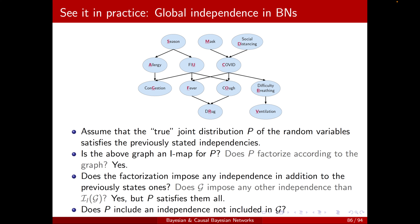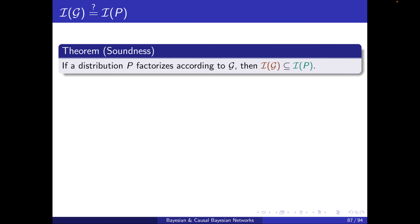Now here's the new question. What about the other way around? Does that P distribution include an independence that I cannot obtain by playing with the factorization? Basically, I'm asking whether IG and IP are equal to each other. Recall the theorem of soundness: if a distribution P factorizes according to G, then IG is a subset of IP. This implies that all independencies implied by G are included in P.